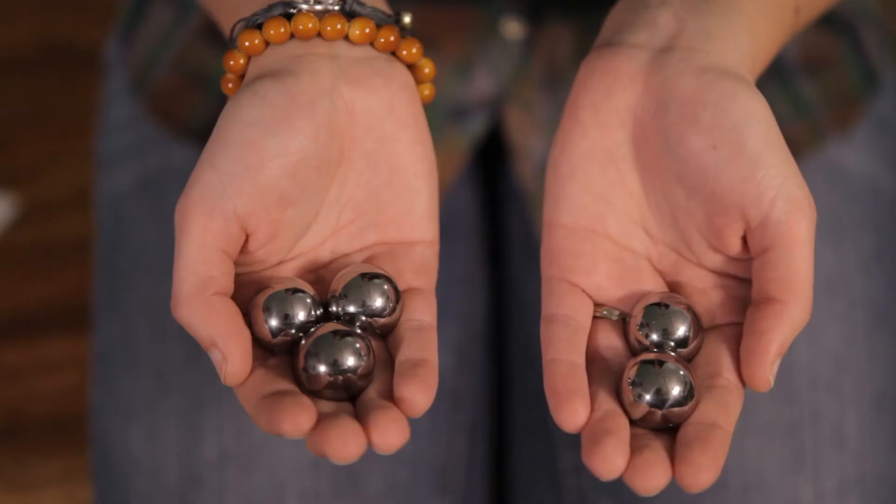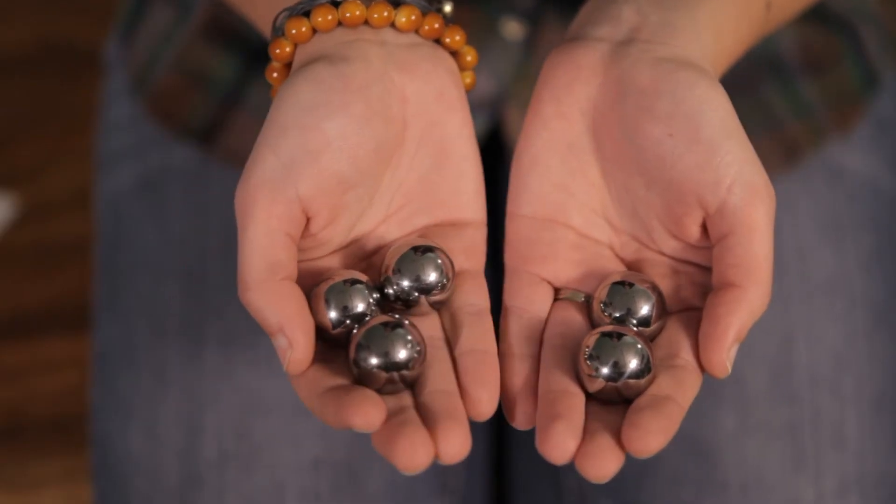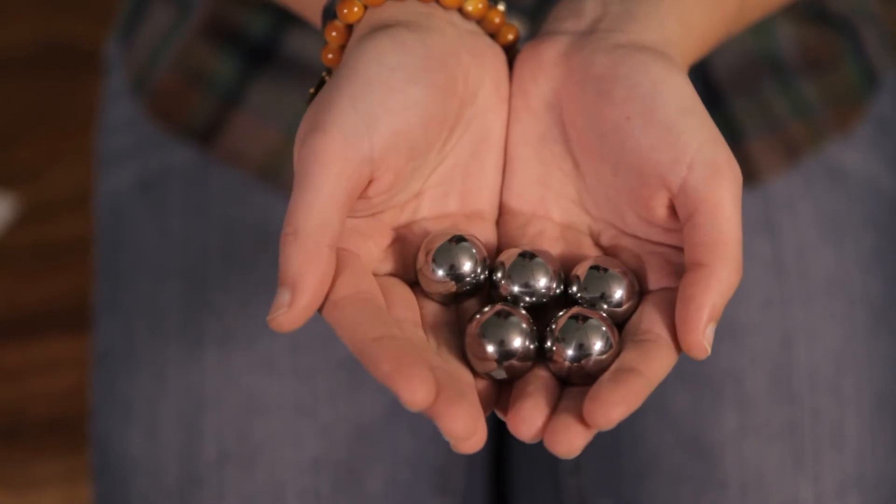Suppose in this hand I have three marbles, and in this hand I have two marbles. If I combine them together, I have five marbles. This is addition. It's when you combine two whole numbers.